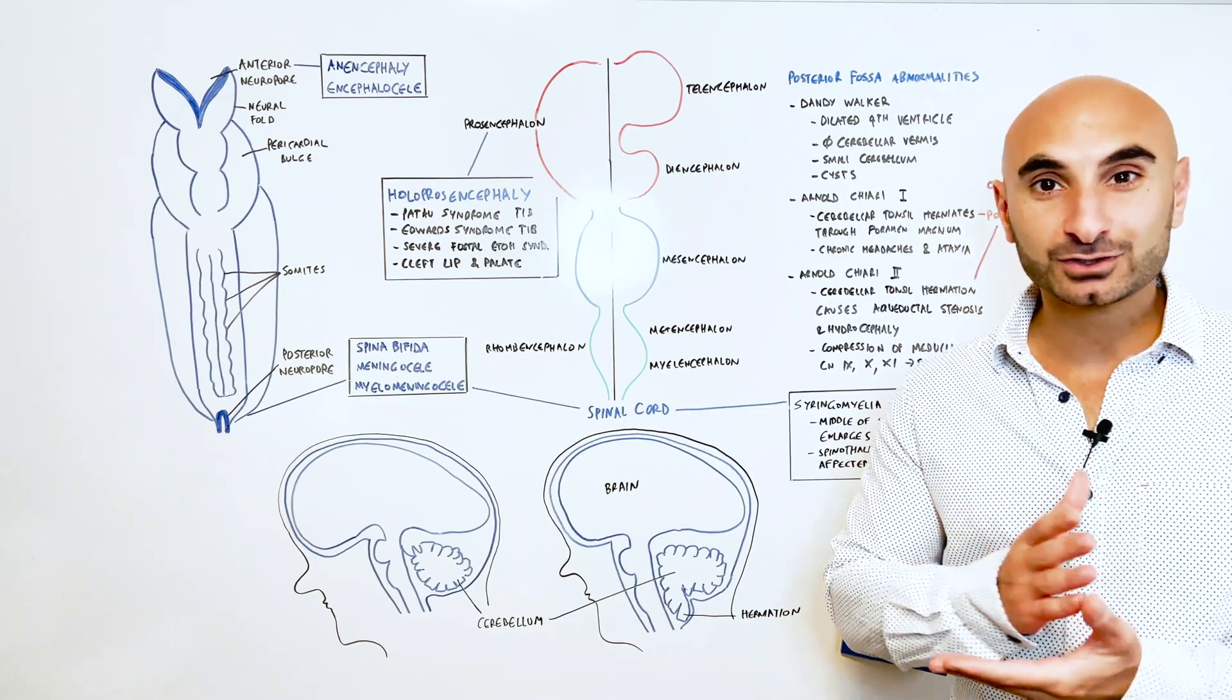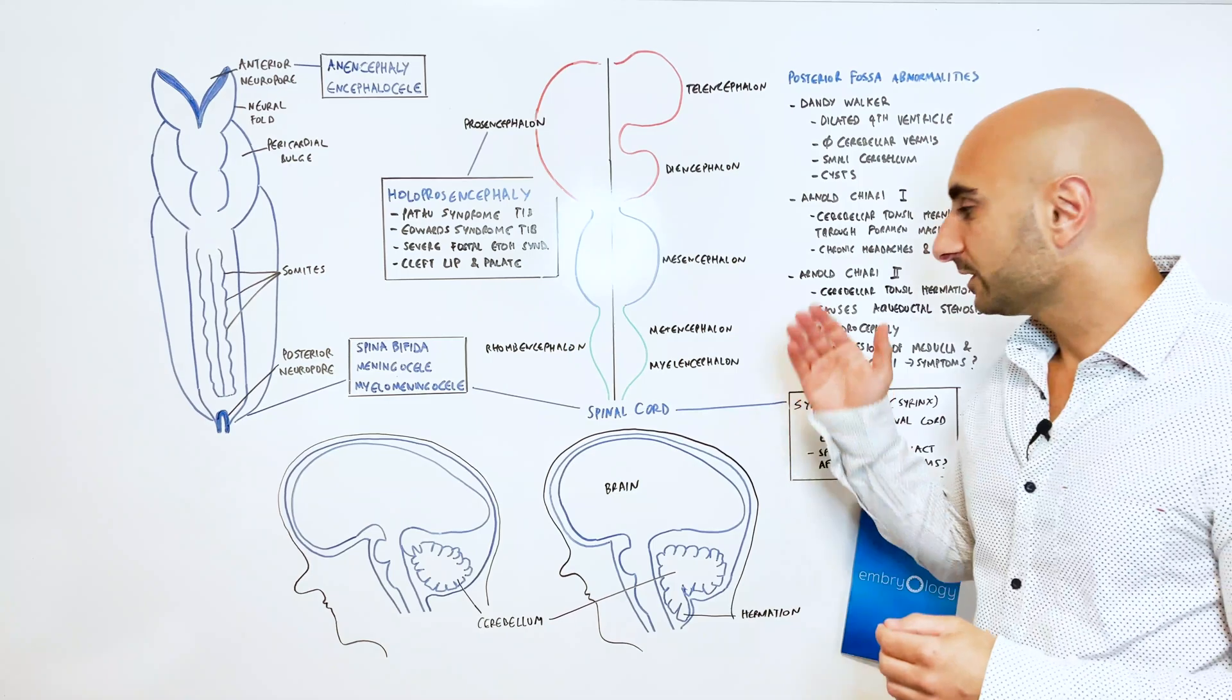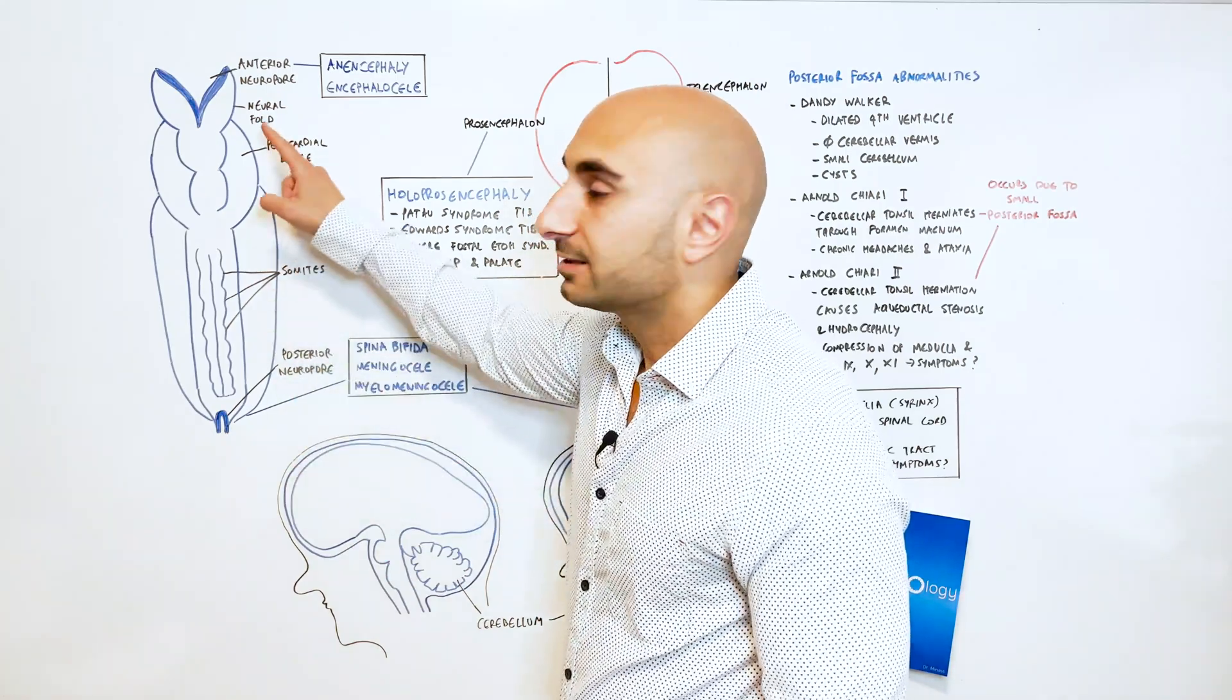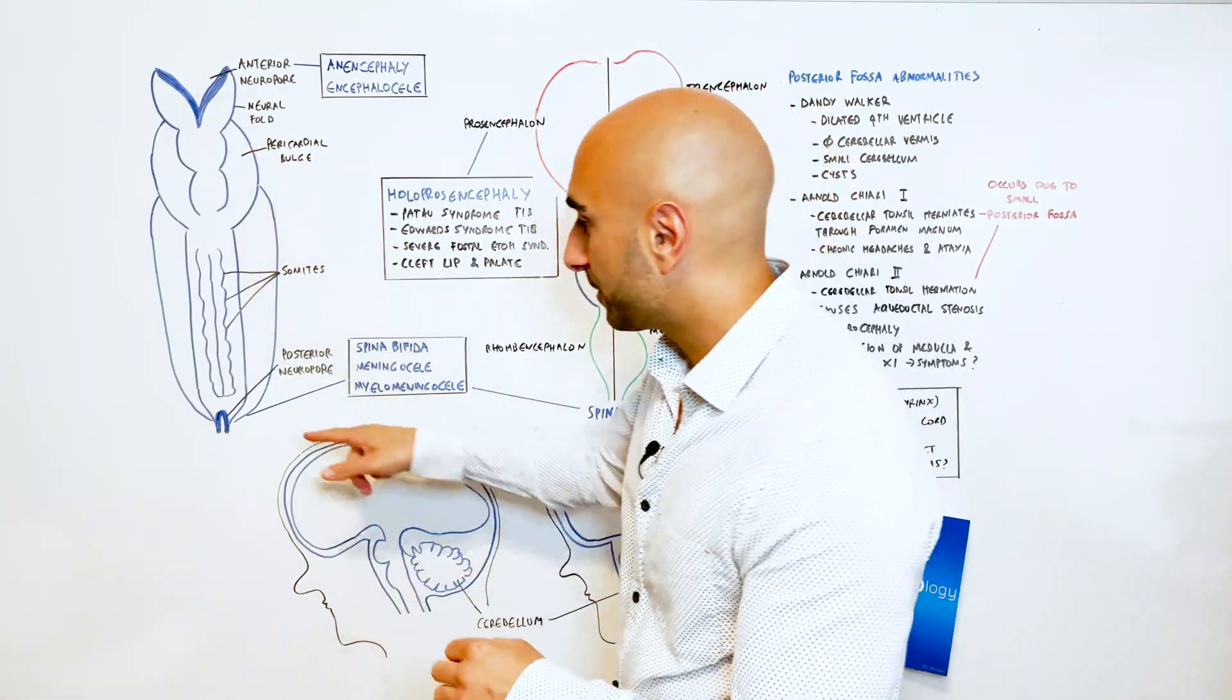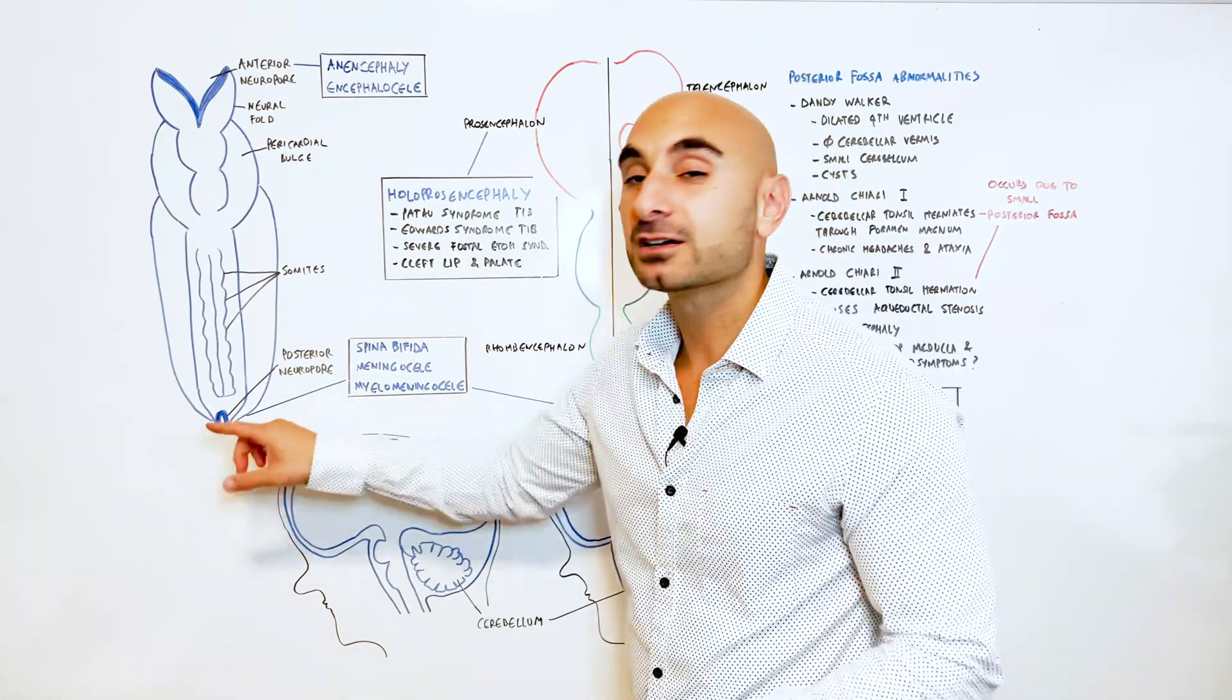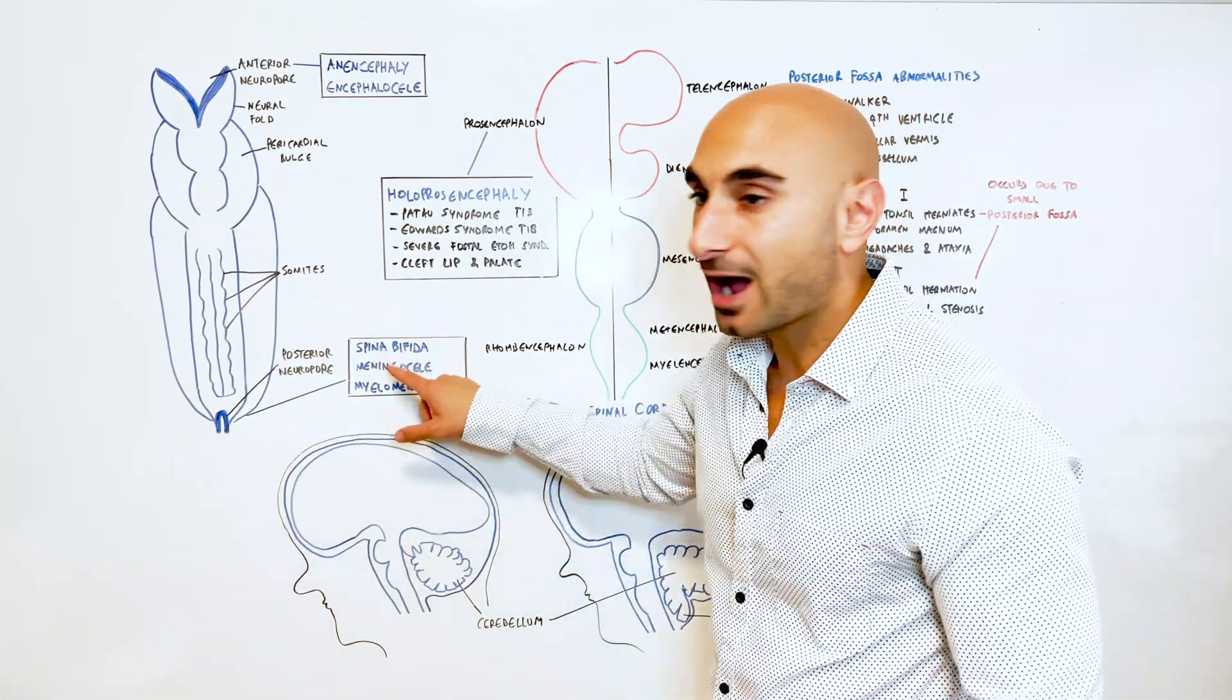Based off that, you should be able to list all of the symptoms associated with any of those. Moving down to the spinal cord, paying attention at the posterior neuropore. Just like the anterior neuropore would close for normal development, the posterior neuropore should also close to continue normal development. And failure of closure of the posterior neuropore can lead to spina bifida.